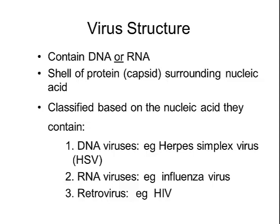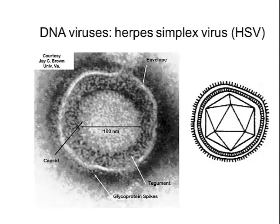Let's take a look at an example of a DNA virus. Herpes simplex virus is a DNA virus that causes cold sores. The outer envelope is your protein with the capsid, and on the inside you have DNA. This virus has a very distinct shape, and as we look at all the different viruses, we can notice that they all have very unique shapes. Those shapes are actually going to help determine what cells they can infect and how they infect them.